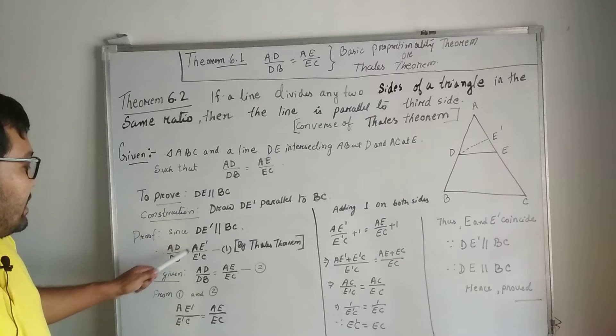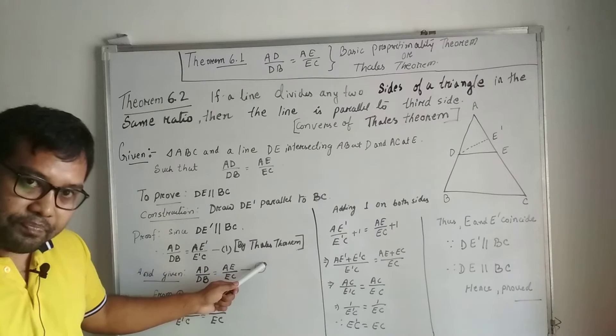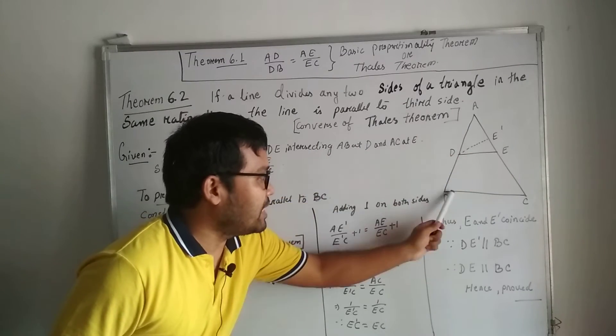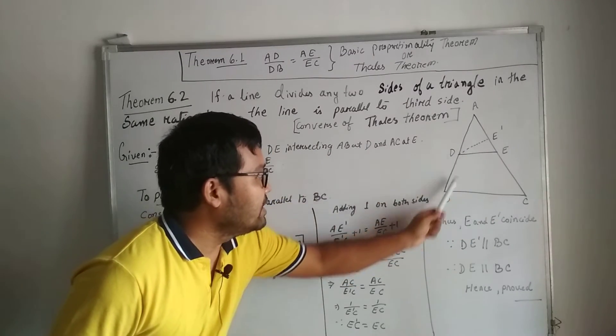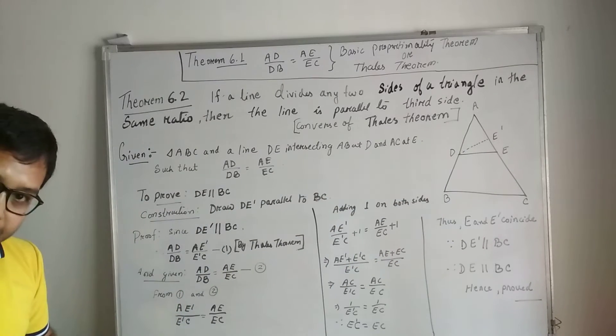Proof: Since DE' is parallel to BC from construction, AB by DB equal to AE' by E'C. This is by Thales theorem. Since DE' is parallel, then AD by DB equal to AE' by E'C, which is fine.